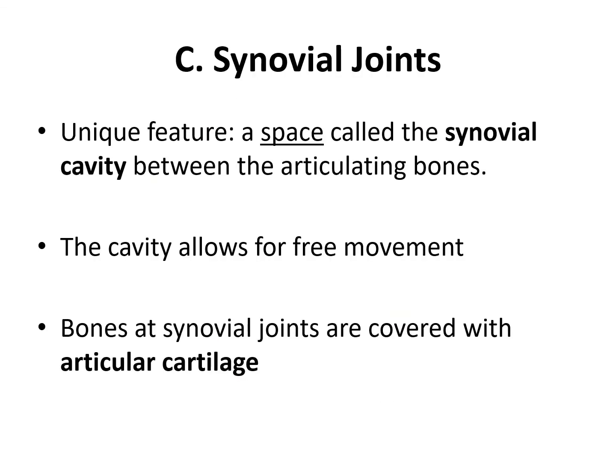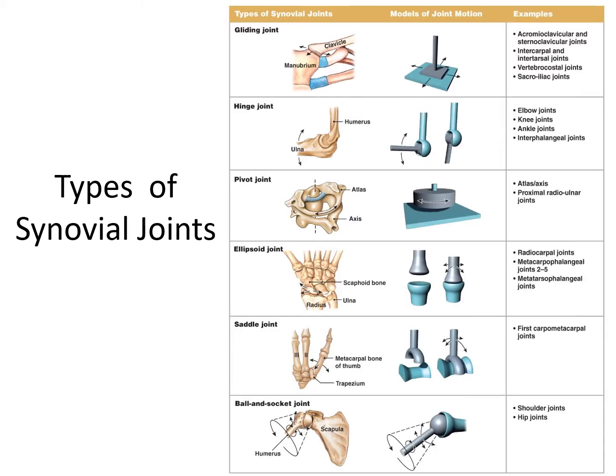Synovial joints are likely what you think of when you think of a joint — a joint with a lot of movement. We're dealing with a joint that has a synovial cavity filled with fluid, and we have articular cartilage made of hyaline cartilage on the surface of the bones allowing them to move freely past each other. Synovial joints can be further characterized based on the type of movement they allow: gliding joints, hinge joints, pivot joints, ellipsoid joints, saddle joints, and ball and socket joints.